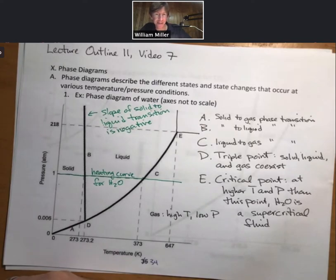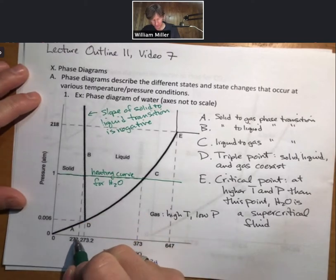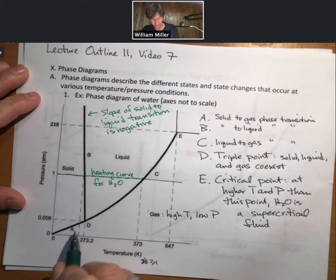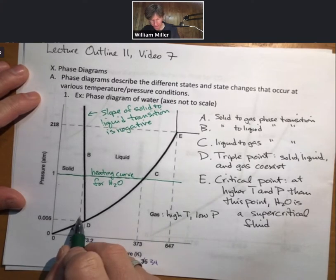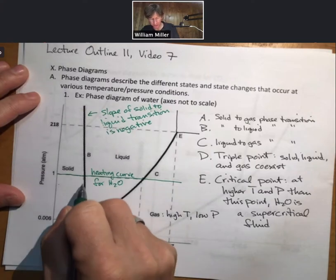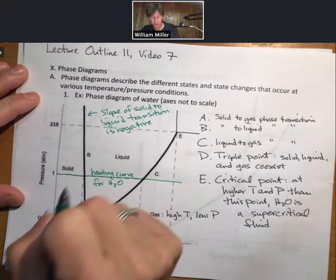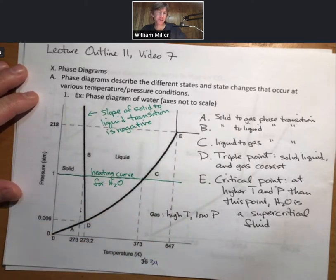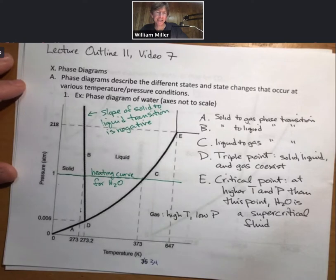What this means is that if you're at 273 Kelvin and you are at a low pressure, if you increase pressure you will turn it from a solid to a liquid. In fact, this is related to the fact that the solid phase of H2O is less dense than the liquid phase of H2O.